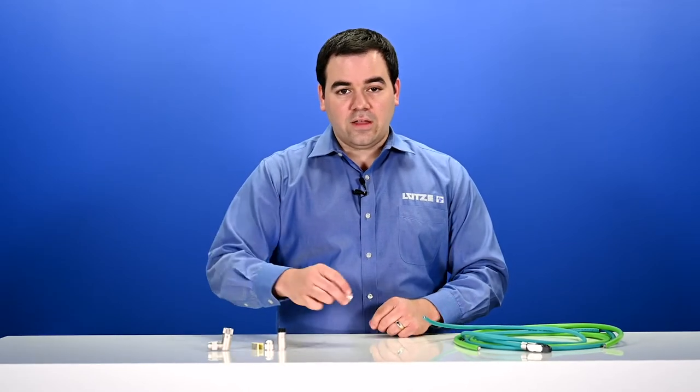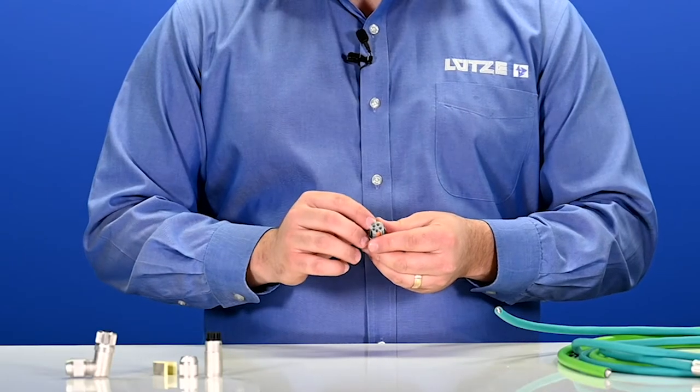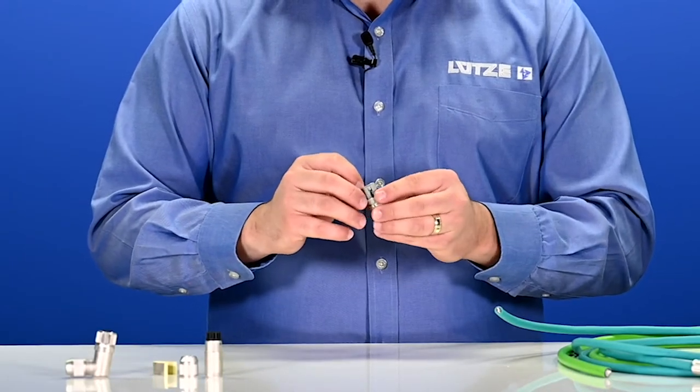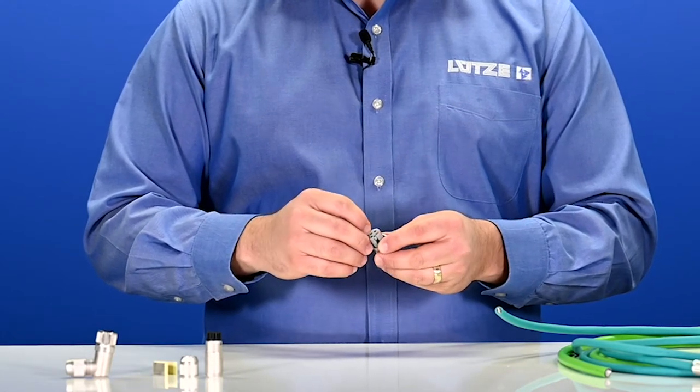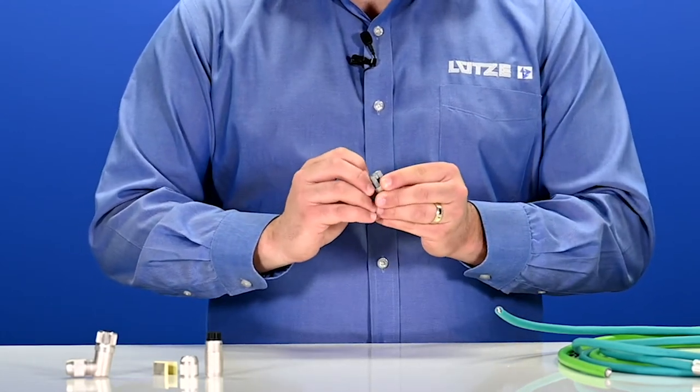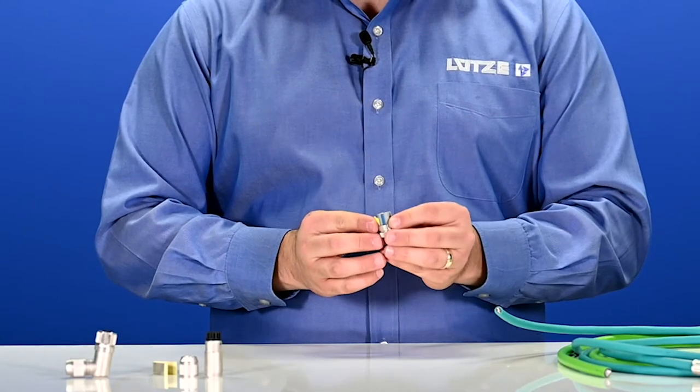The first thing that I'd like to point out about these connectors is that unlike most traditional M12 connectors, these don't use a screw type termination. These actually use a cage clamp design that opens up very easily with nothing more than a fingernail and allows you to make a vibration-proof connection to that terminal.